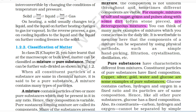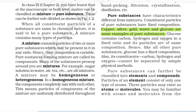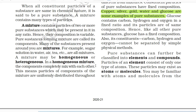The components of a mixture can be separated by using physical methods such as simple hand picking, filtration, crystallization, distillation, etc. Pure substances have characteristics different from mixtures. Constituent particles of pure substances have fixed composition. Copper, silver, gold, water and glucose are some examples of pure substances. Glucose contains carbon, hydrogen and oxygen in a fixed ratio and its particles are of same composition. Hence, like all other pure substances, glucose has a fixed composition. Also, its constituents — carbon, hydrogen and oxygen — cannot be separated by simple physical methods.